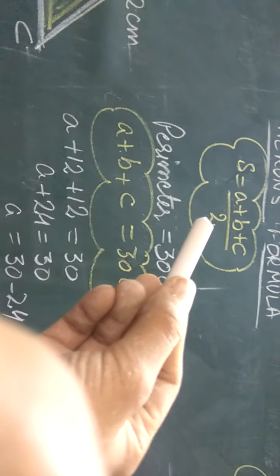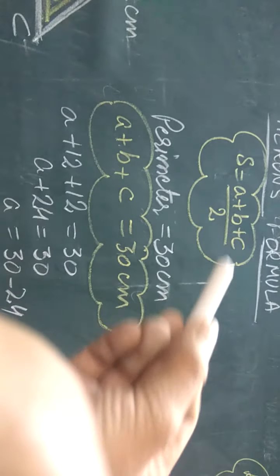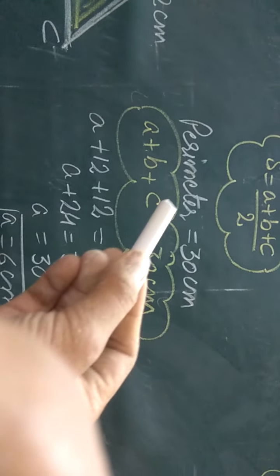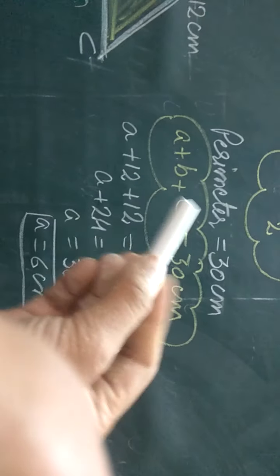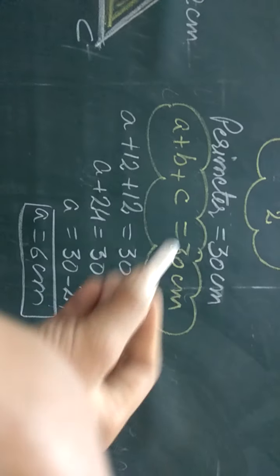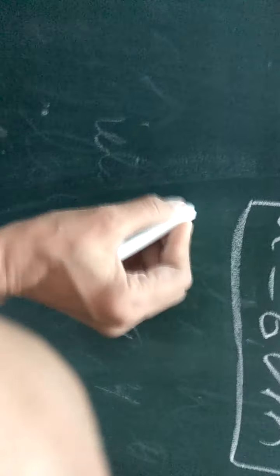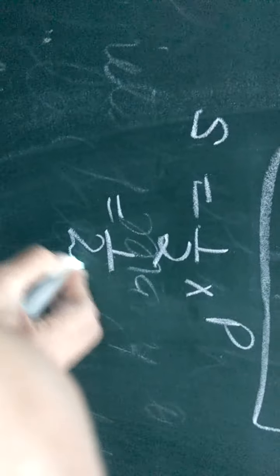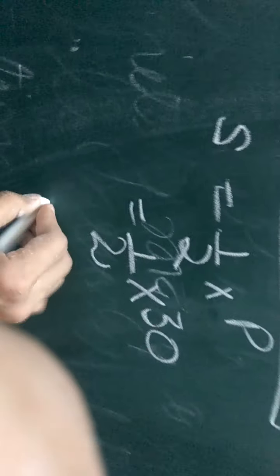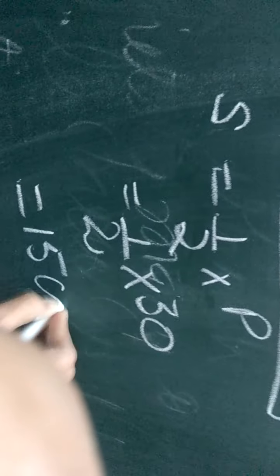One is by putting all three sides in this formula, and second is using perimeter. Because I told you earlier that semi-perimeter is half of the perimeter, so we will directly find it from this. If perimeter is 30 cm, then its half will be 15 cm.